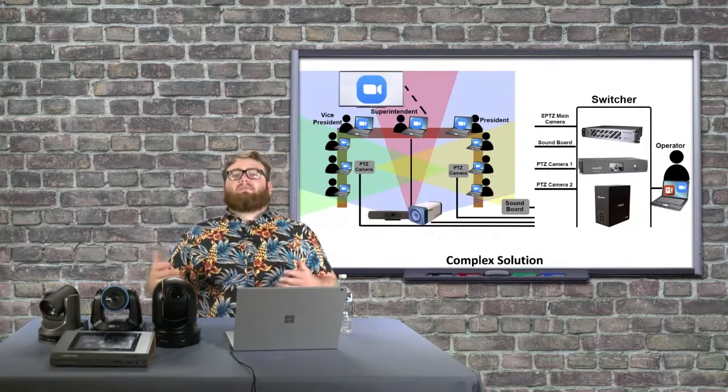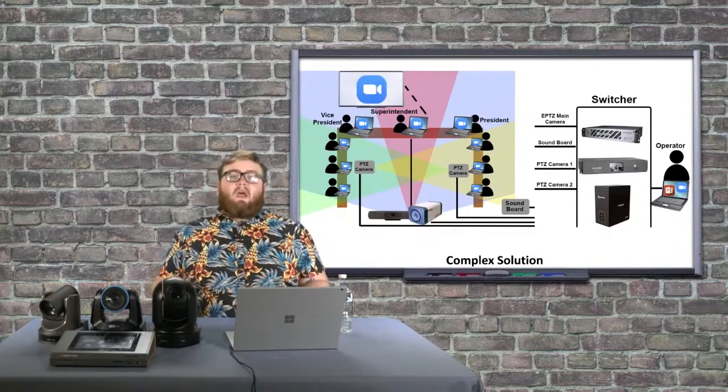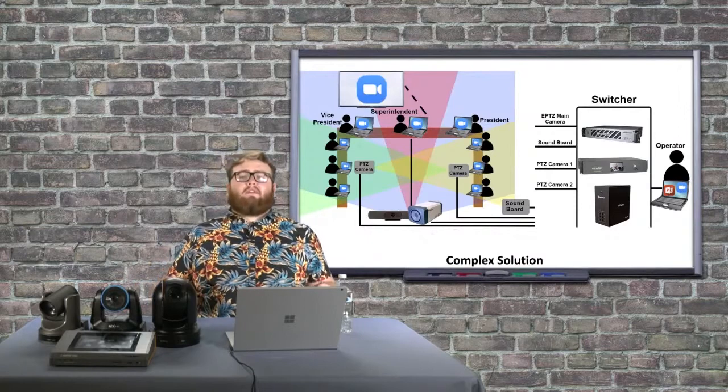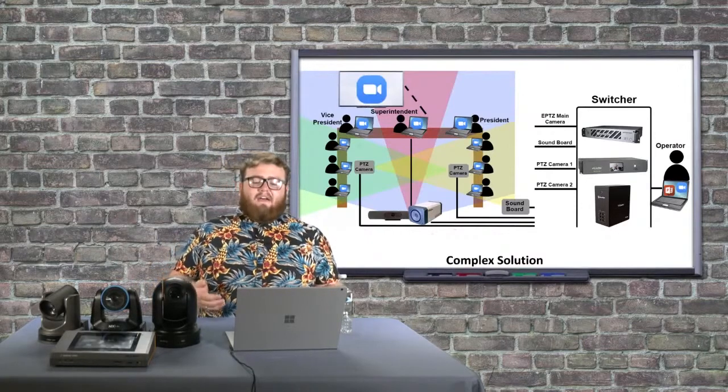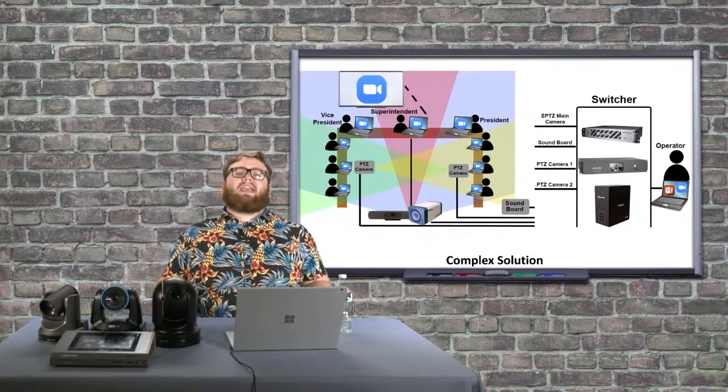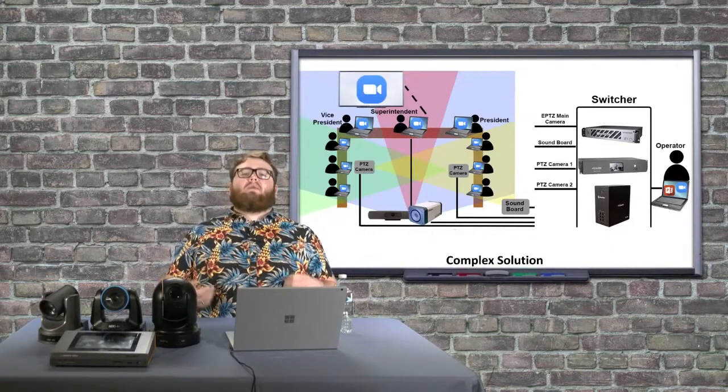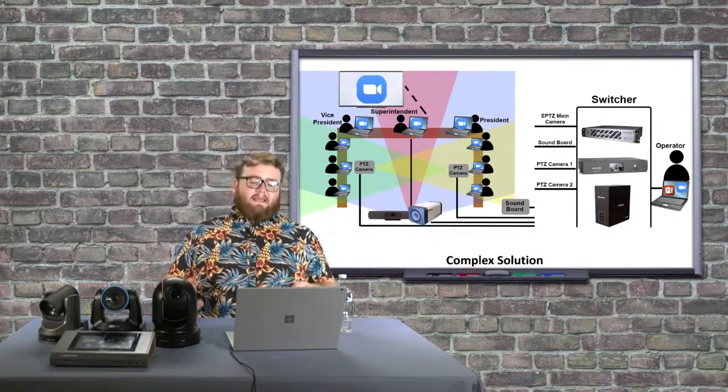Then there's the Pearl Mini's older brother, the Pearl 2, which works almost the same way but you can bring in more inputs and you have more flexibility. And then you have the TriCaster Mini 4K NDI which is a very robust production system that will be able to handle all of these inputs.